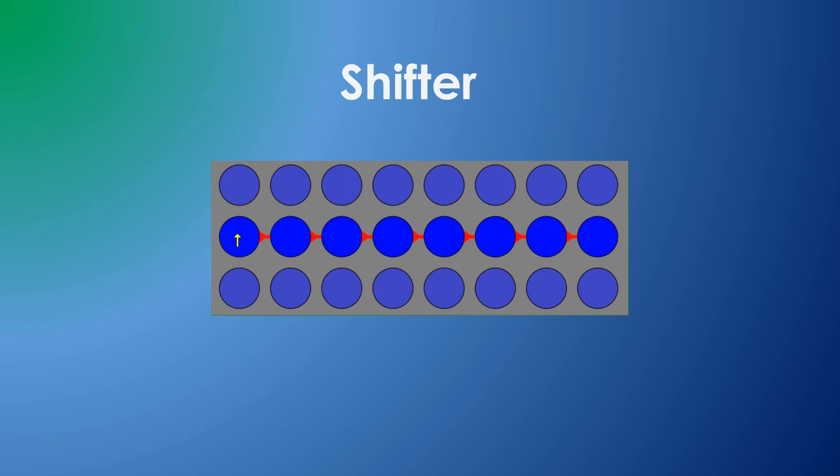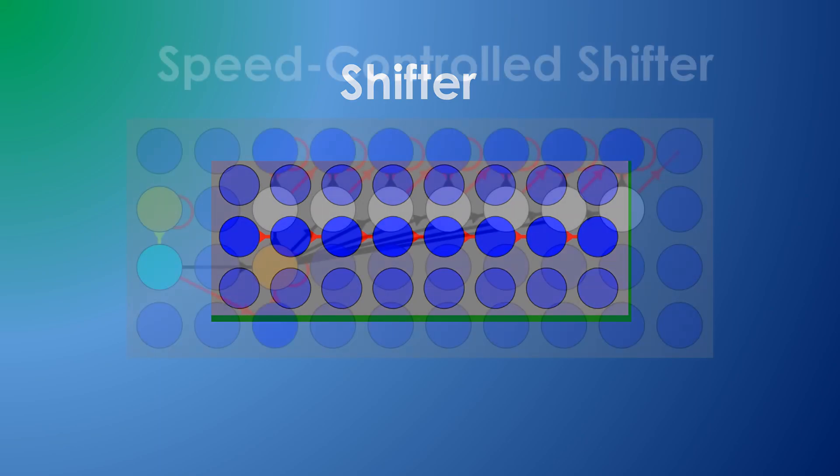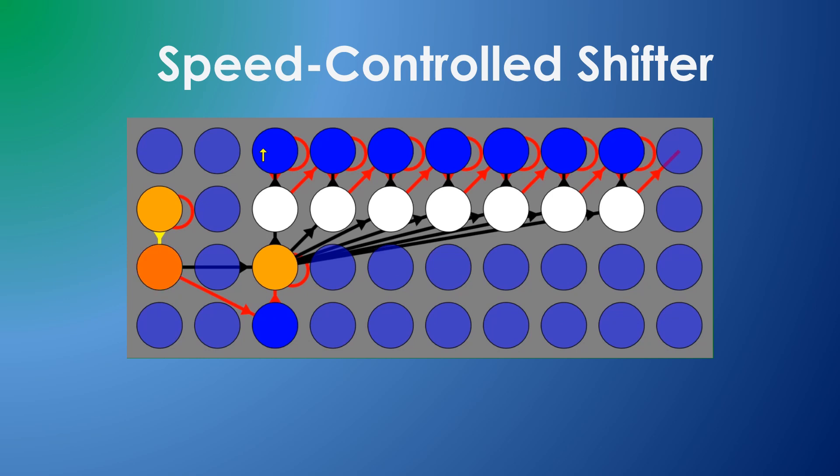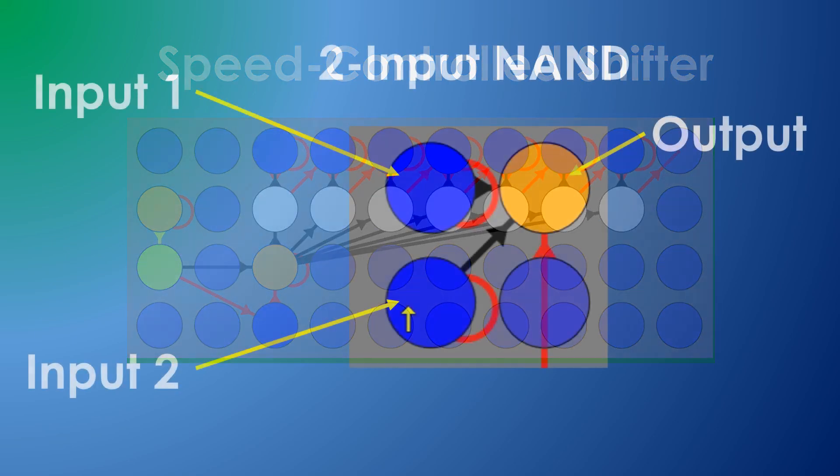Like this one, which creates a chain of firing neurons. Or this one, which is a similar chain, but has a speed controlled by the firing rate of another neuron. Or this one, which represents a two-input NAND gate.